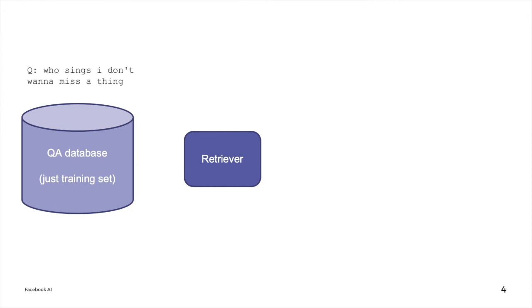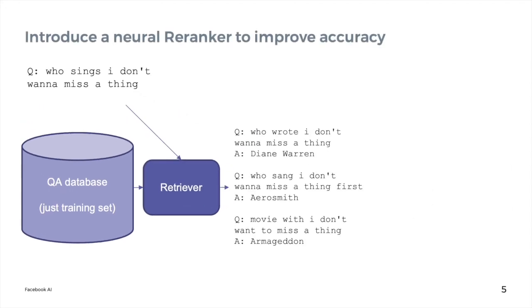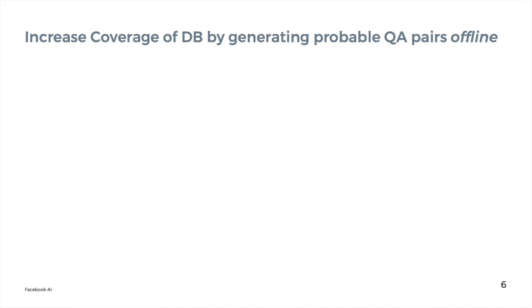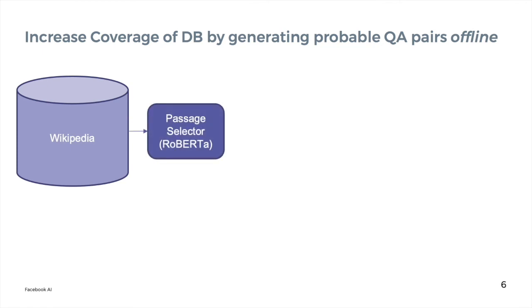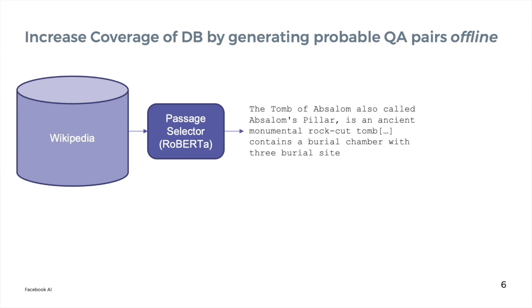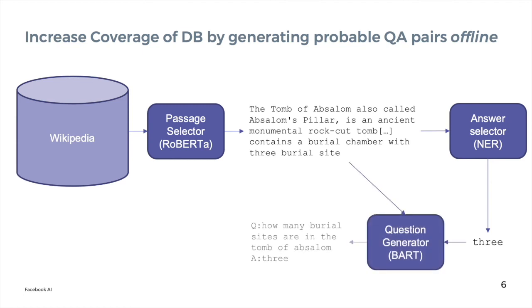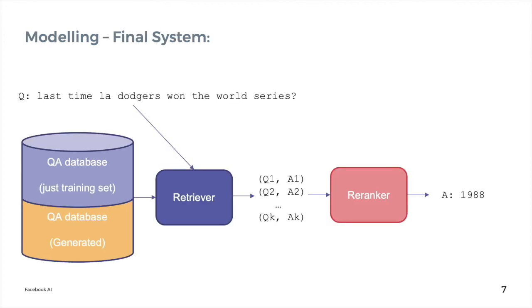Sometimes the retriever struggles to retrieve the best QA pair. We can boost accuracy using a neural re-ranker on the top K results from the retriever. We also want to increase the coverage of the database by automatically generating probable QA pairs. We train a model to select passages from Wikipedia which are likely to contain information that people ask questions about. From these documents, we select answers using named entity recognition and use a BART question generator to generate QA pairs. These questions are sometimes poorly formed, ambiguous, or only make sense in a local context, so we filter them using what we call a global consistency filter, which consists of an open domain QA system. If the answer to the open domain QA system matches the original answer, the QA pair is added to the database. This is our final system, consisting of the database, retriever, and re-ranker.